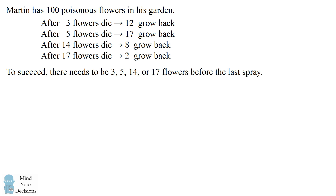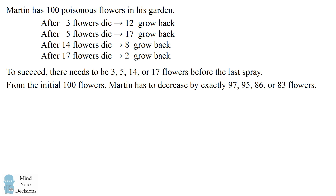We can understand why by thinking forward and reasoning backwards. In order for Martin to succeed, there needs to be 3, 5, 14, or 17 flowers just before the last time he sprays the flowers. This means from the initial 100 flowers, Martin has to decrease the number of flowers by exactly 97, 95, 86, or 83 flowers.